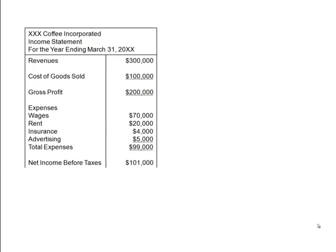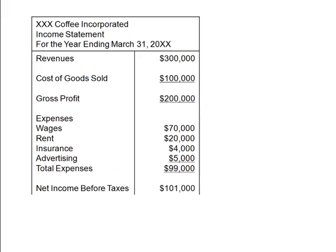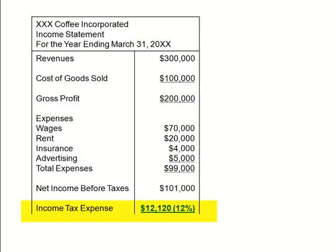Double taxation is another major disadvantage of the corporation. Triple X Coffee Incorporated generated revenues of $300,000, and after all operating costs and expenses, has a net income before taxes of $101,000. Because the corporation is a separate entity from its owners, the corporation must pay income taxes to the government. At a 12% income tax rate, Triple X Coffee Incorporated pays just over $12,000 in taxes.